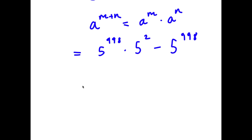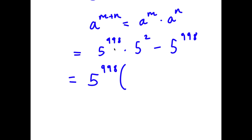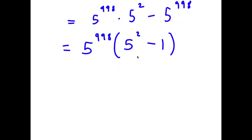Now I'm going to factor out 5 to the power of 998. So I have 5 to the power of 998 times — 5 to the power of 998 times 5 to the power of 2 divided by 5 to the power of 998 is 5 to the power of 2, and negative 5 to the power of 998 divided by 5 to the power of 998 is negative 1. So I have 5 to the power of 998 times 5 squared minus 1.